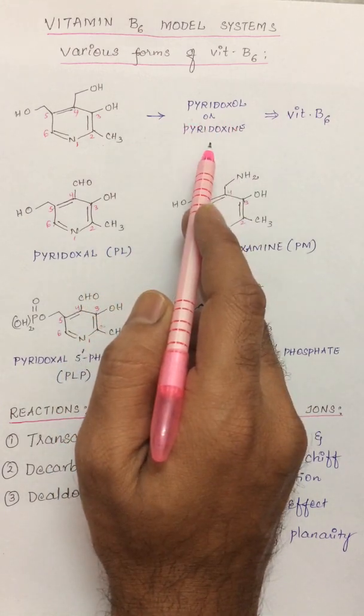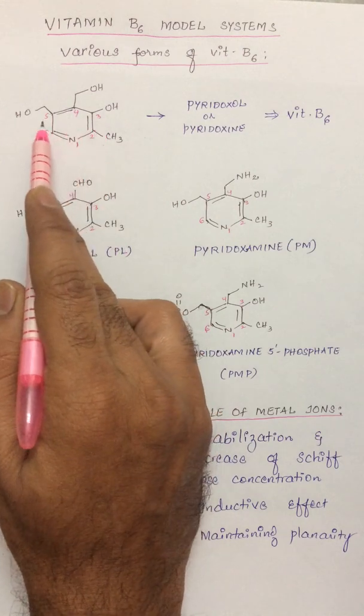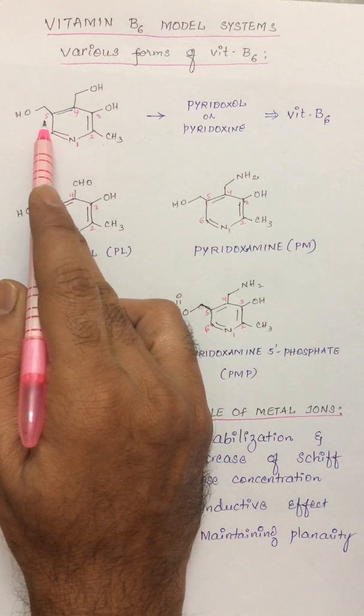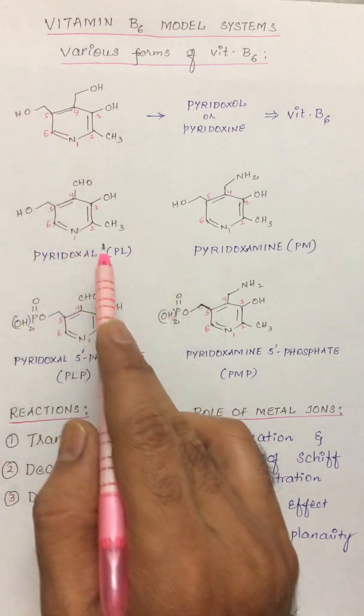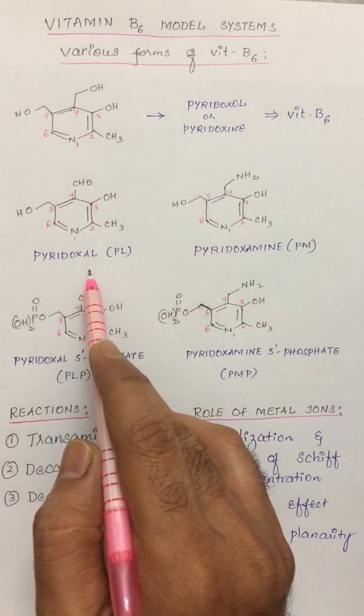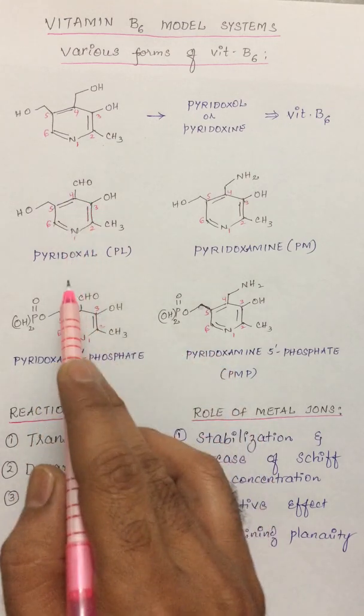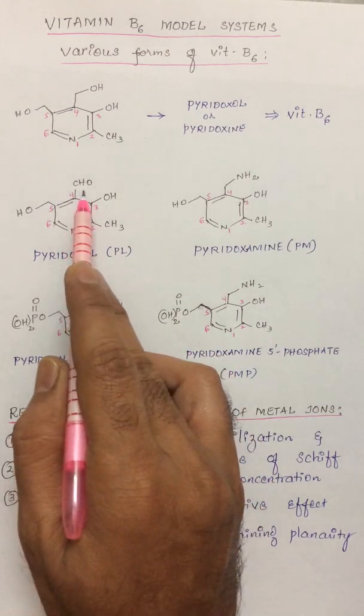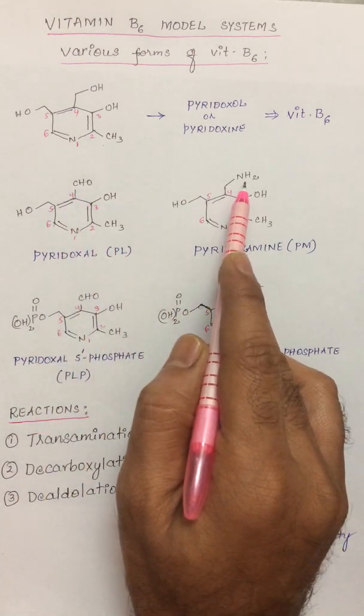Vitamin B6 is pyridoxal or pyridoxine. There are substitutions present on the ring at 2, 3, 4, and 5 positions. Depending upon the change of some substitutions, there are various forms of vitamin B6. At position 4, if there are some changes, we call them pyridoxal when an aldehyde group is present and pyridoxamine when there is an amine group present.